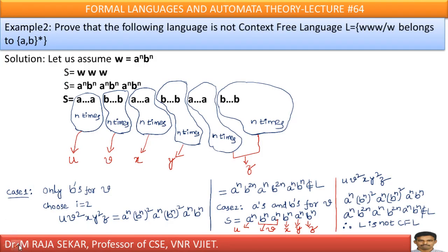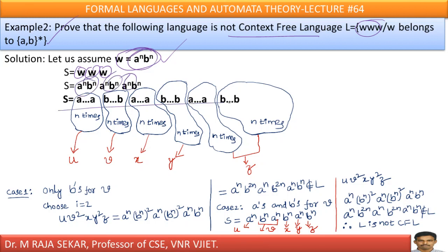Let me consider one more simple example. Prove that the following language L = {ww | w ∈ {a, b}*} is not a context free language. Let me choose some string from this language. Let w = a^n b^n. Therefore, ww means I must write a^n b^n two times. Now I must split this particular string into five parts u, v, x, y, z.